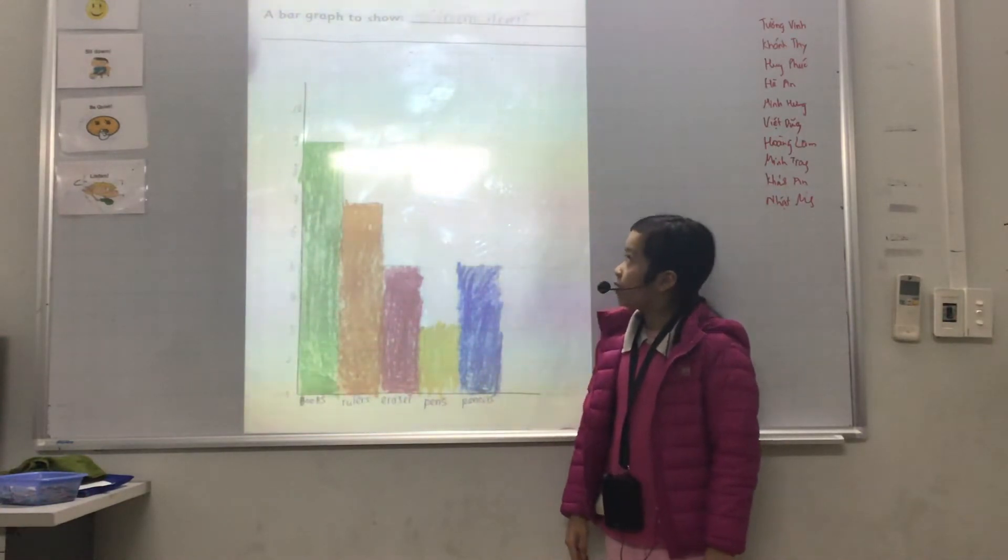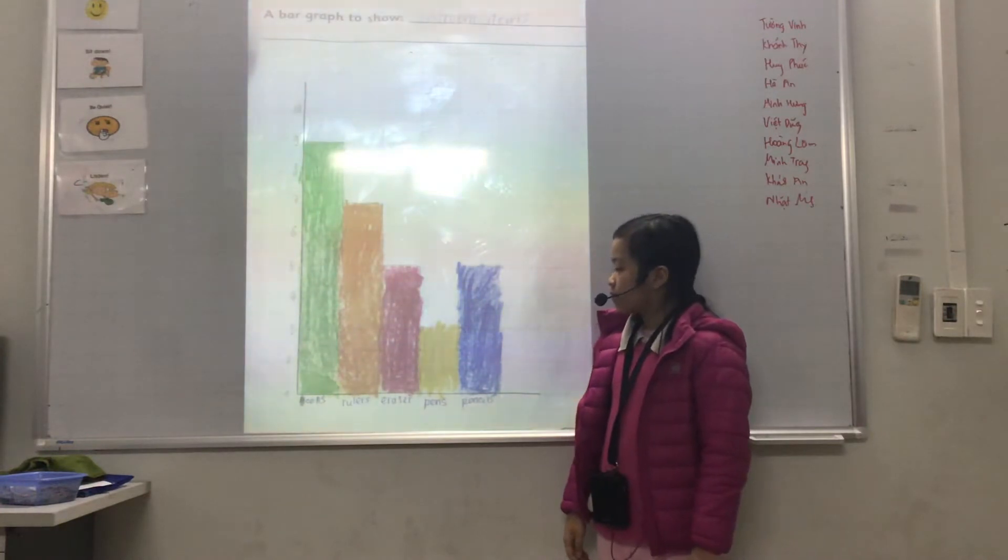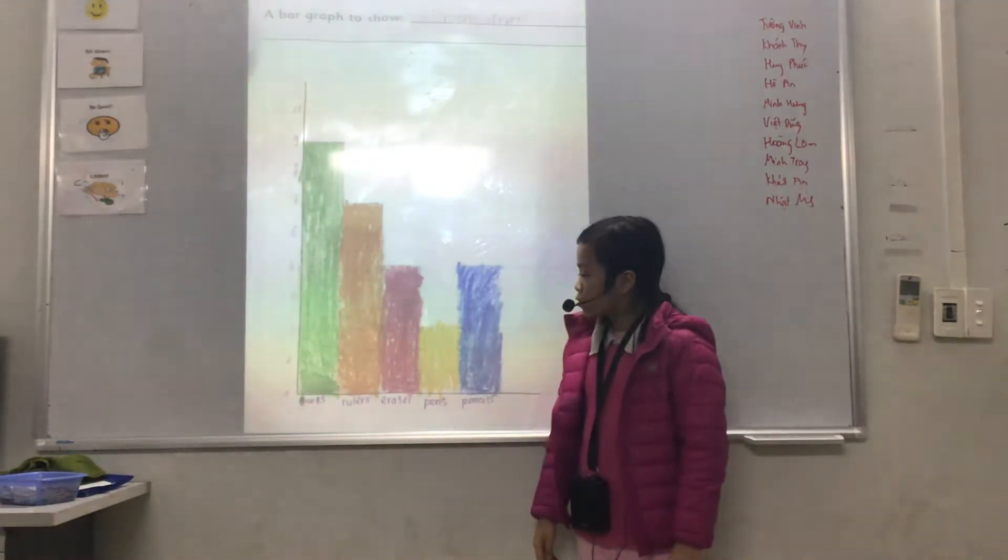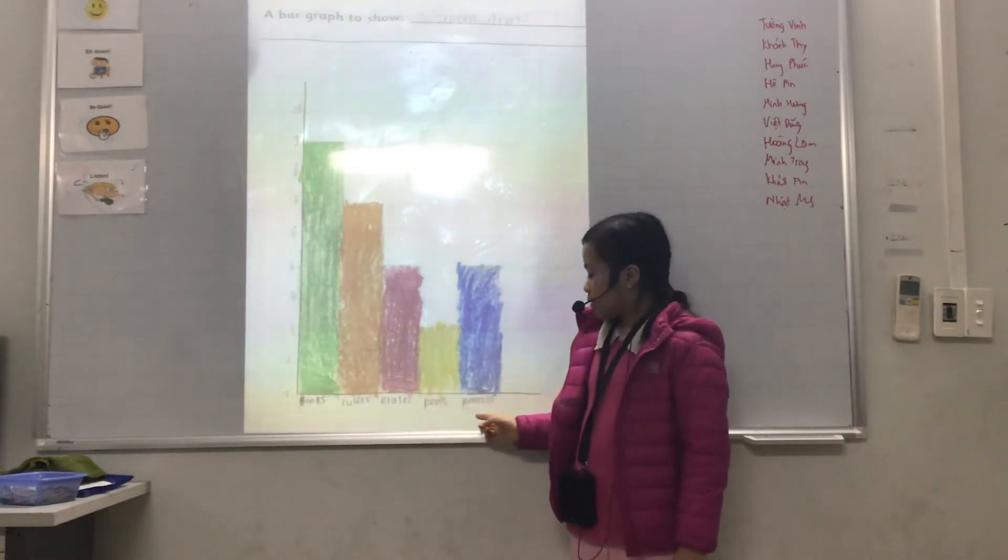Today I will tell you about a bar chart to show classroom items. The classroom items are books, rulers, erasers, pens, and pencils.